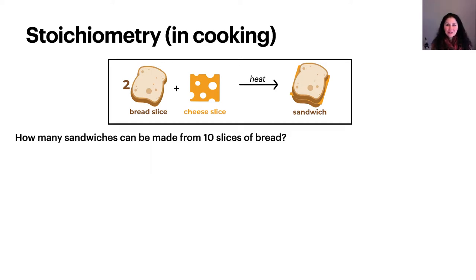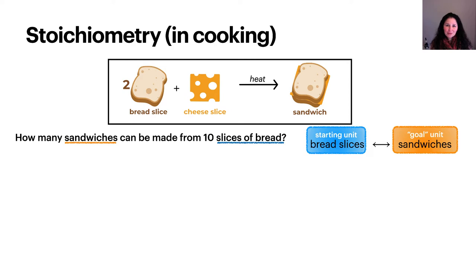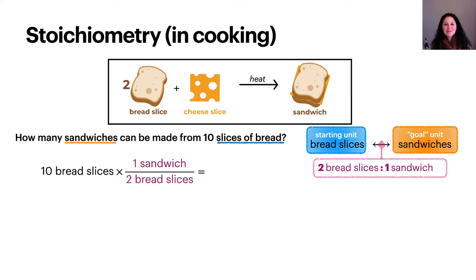Now that we recognize stoichiometric relationships between bread, cheese, and sandwiches, let's see how these relationships can be applied as unit conversion factors. Let's walk through the steps to answer this question: how many sandwiches can be made from 10 slices of bread? This is really a unit conversion problem — the conceptual strategy is to convert units of bread slices to units of sandwiches. Our conversion factor is the stoichiometric relationship between the two. We write the conversion factor as a fraction so that the units cancel appropriately, leaving us with the answer: five sandwiches could be made from 10 slices of bread.